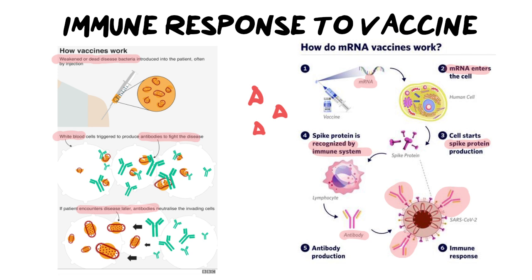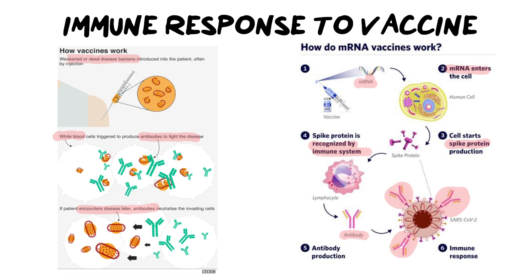The only major difference is that in the first option, we were exposing you to the whole bacteria or virus — just a little hole in it or slightly weakened. In the second option, we are just exposing you to the recipe to make the antigens on the outside. Now, this is all active immunity, which means that you are being exposed to the pathogens — so this is active immunity.